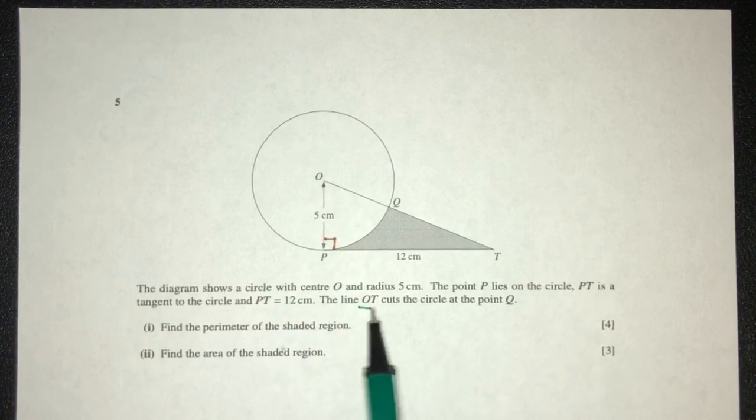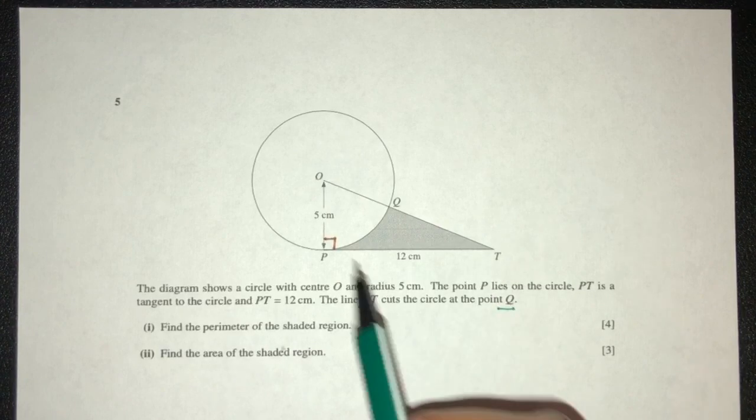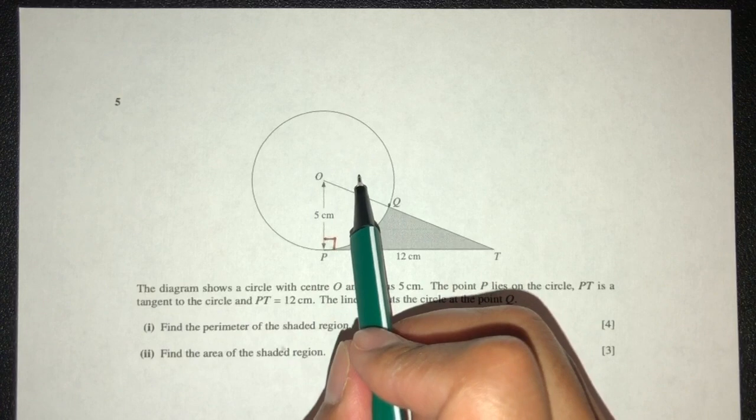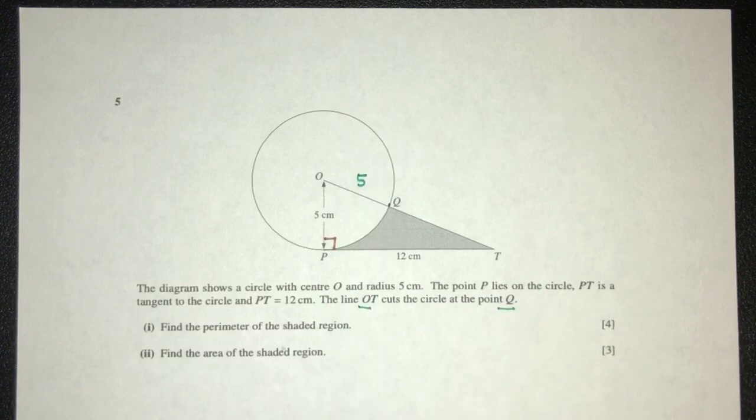Now what else? The line OT cuts the circle at the point Q. OT, right here, Q. Now we also know that OQ is also 5 because it is also the radius, right? So OQ, not T.